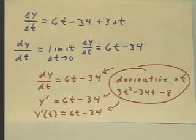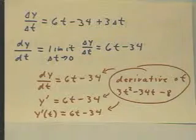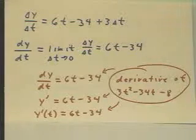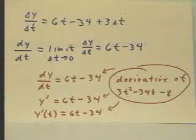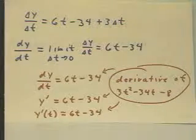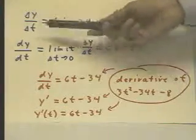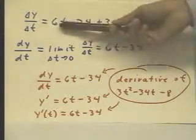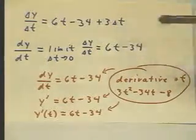Now, if we wish to ask ourselves, what is the precise rate at which the depth is changing at a given time, clock time t, we begin by thinking that our delta y over delta t is, as we found, 6t minus 34 plus 3 delta t.